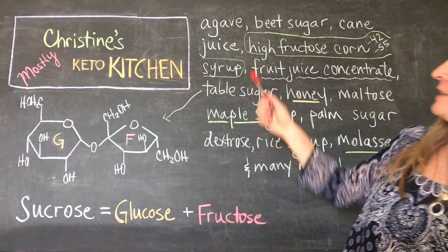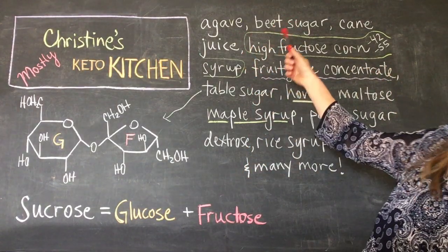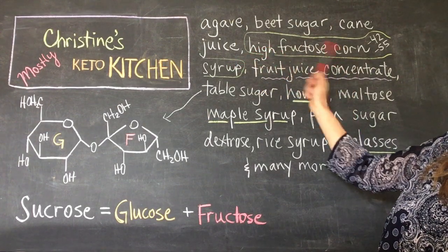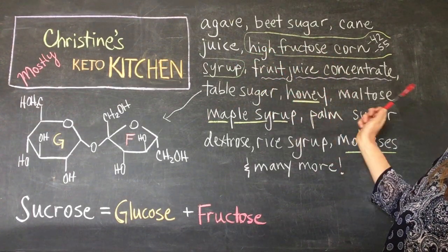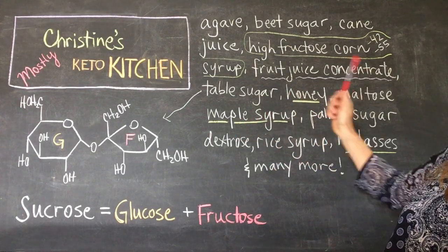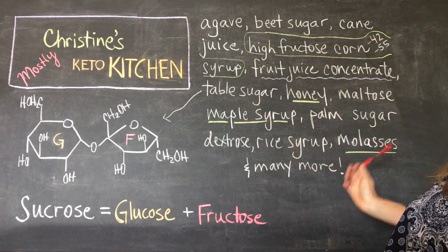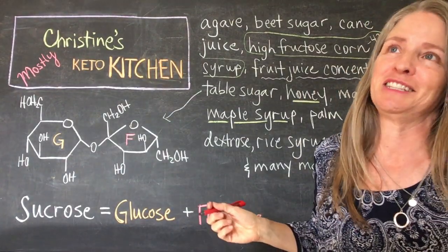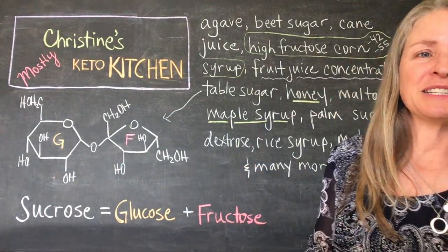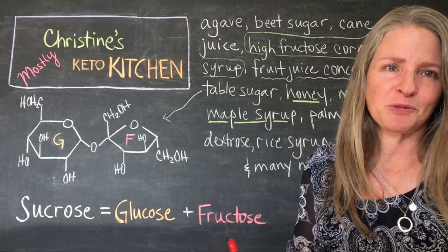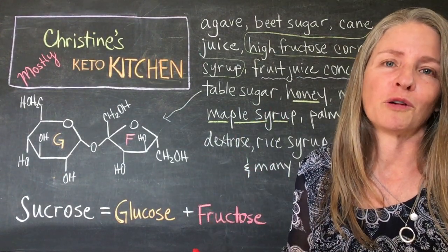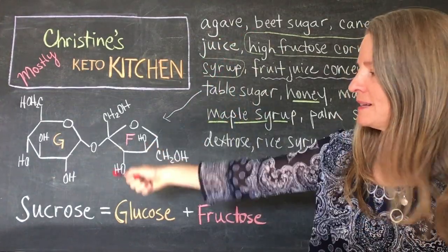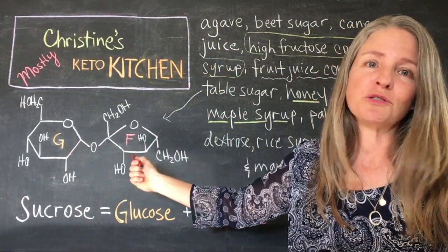All of these different names I have up here — agave, beet sugar, cane juice, high fructose corn syrup, fruit juice concentrate, table sugar, honey, maltose, maple syrup, palm sugar, dextrose, rice syrup, molasses, and many more — there are actually like 61 or more. I think that was from a UCSF site listing how many different names we have in our food system for sugars these days. And for the vast majority of these, they are basically just sucrose.